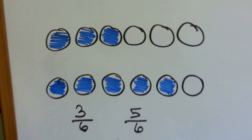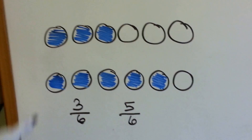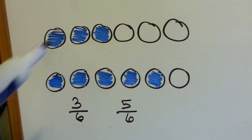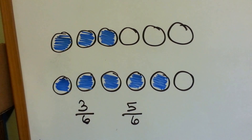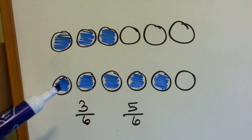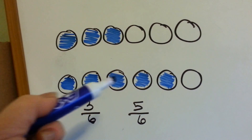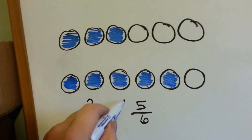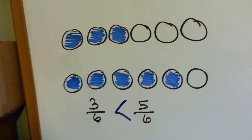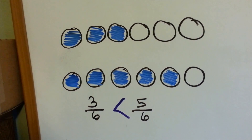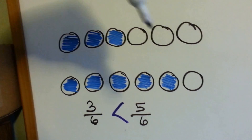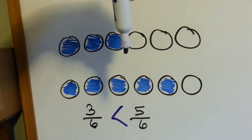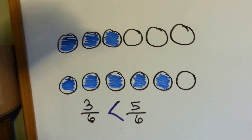Look at this one. We have three-sixths and we have five-sixths. And which one's greater? Which one covers more space of blue? The five-sixths. Big mouth eats big number. Look at the three-sixths — it's half, isn't it? Three-sixths is equal to a half. That's an equivalent fraction.